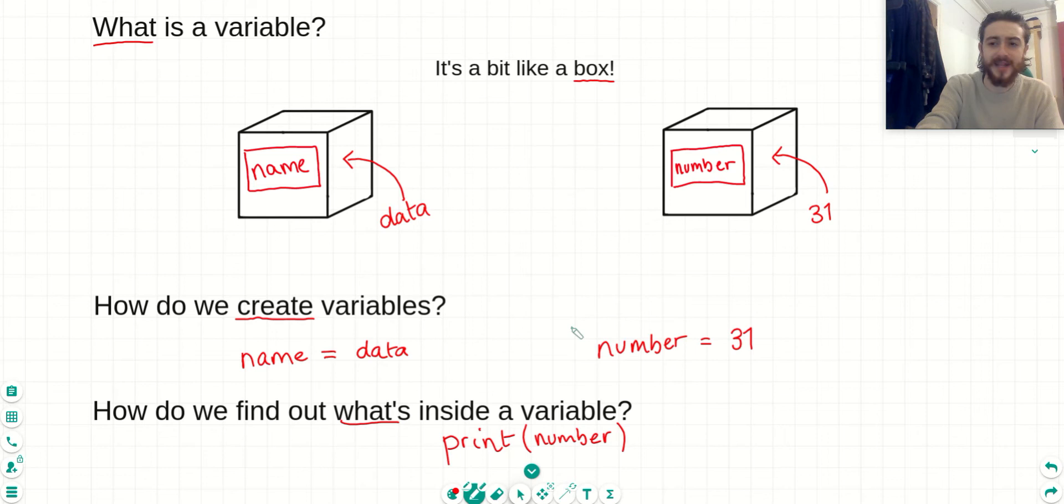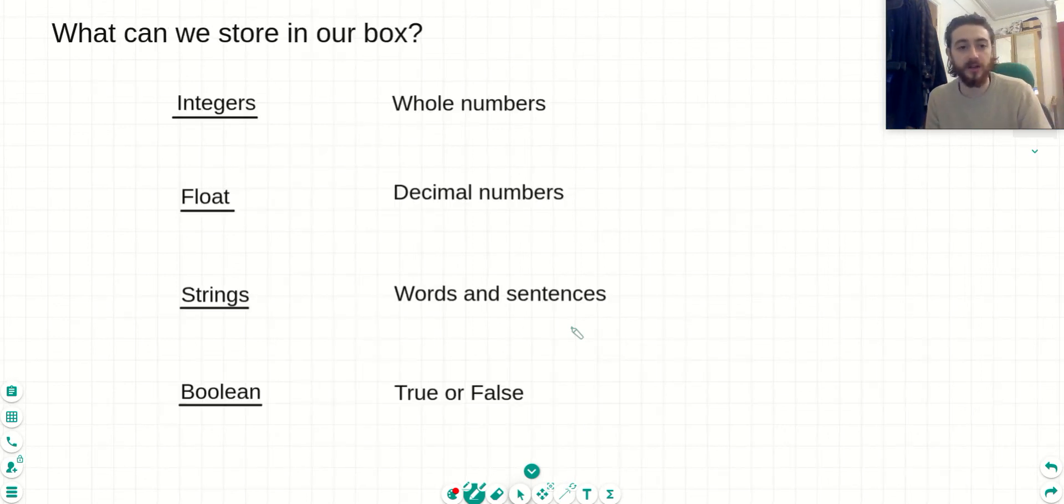So now we know that we can create variables and they can hold this data. What kind of data can we put inside of our variable? So what can we store in our box? And there's four data types in Python. The first one we saw before is integers. Integers are just whole numbers. So if I wanted a variable which stored the value of my age, I would say my age is equal to 24. And that would create a variable of the type integer.